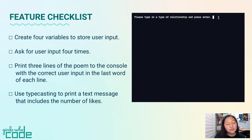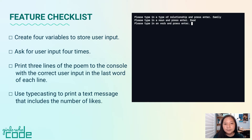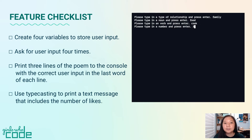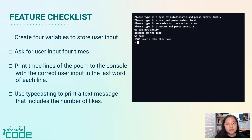If everything is working properly, your project should: create four variables to store user input, ask for user input four times, print three lines of the poem to the console with the correct user input in the last word of each line, and use typecasting to print a text message that includes the number of likes.